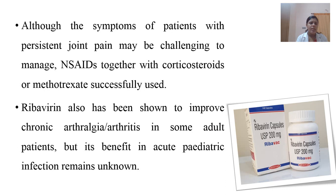Sometimes patients may have severe joint pain. In such situations, we need to provide them NSAIDs along with corticosteroids, and the usually given drug is methotrexate. Recent research shows that this is effective. Another drug is ribavirin, which is an antiviral drug that can improve arthralgia or arthritis in some adult patients, but its effectiveness in pediatric cases is still not known and research studies are ongoing.